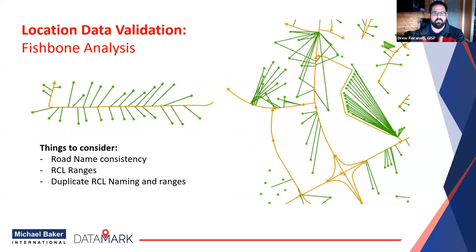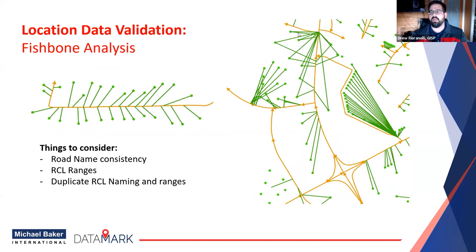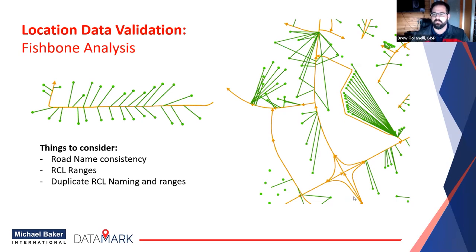Fish bones are a visual validation tool that help identify where a point would fall on a road segment, confirming consistency with address ranges. What you want to see are perpendicular lines — almost like a rib cage — coming off the road centerline. When you start seeing lines cross or multiple lines coming from a single point, that references wrong address ranges, bad street names, or inconsistent street names. It's a visual way to see that errors exist and you need to dive deeper. This is something Datamark performs as part of a validation check, and we also provide you the capability to create these yourself.